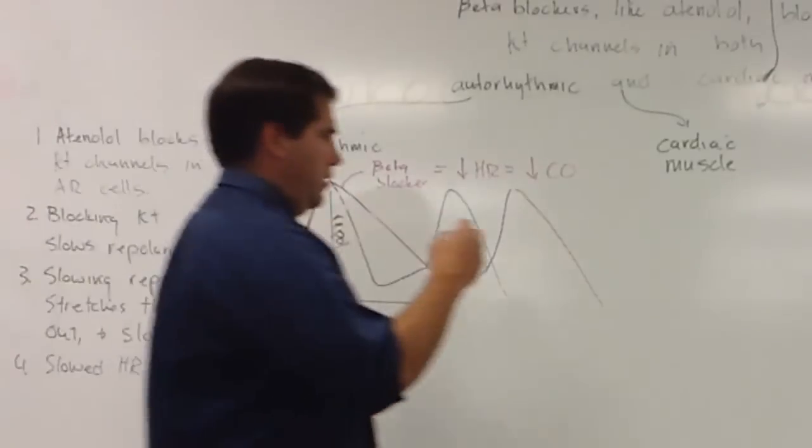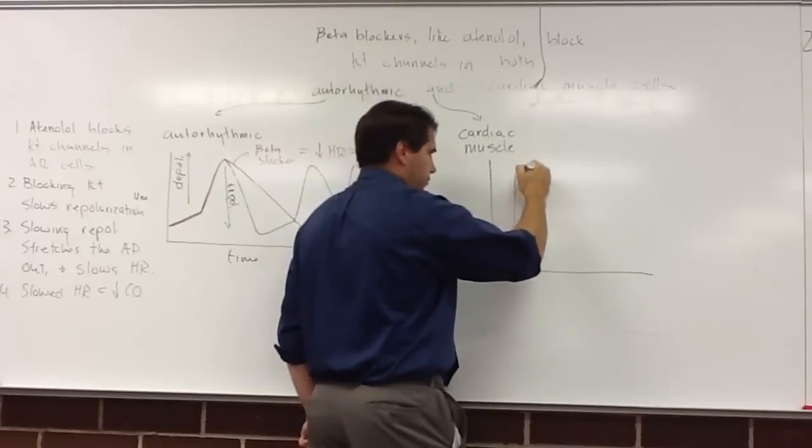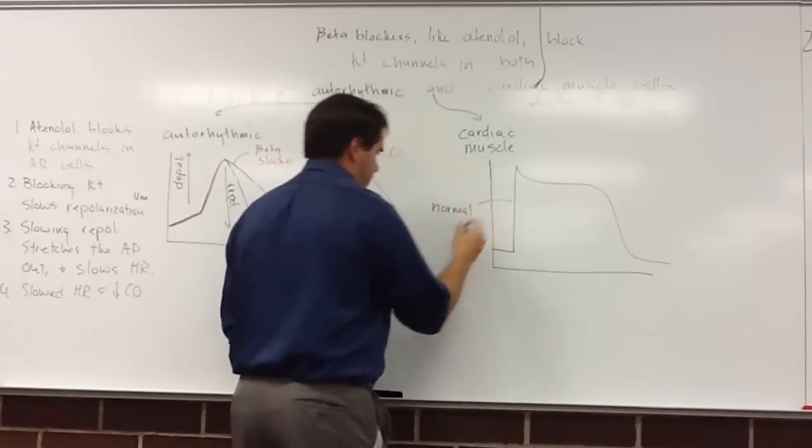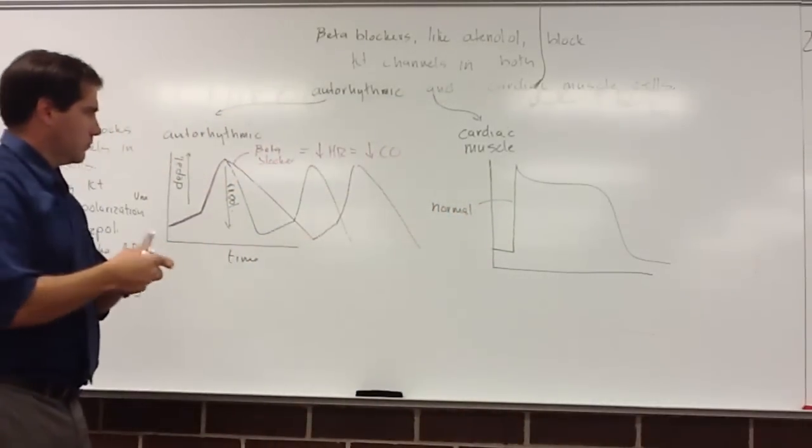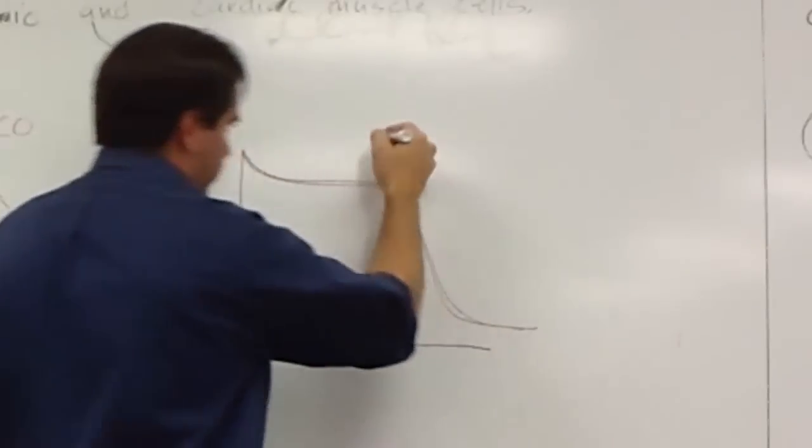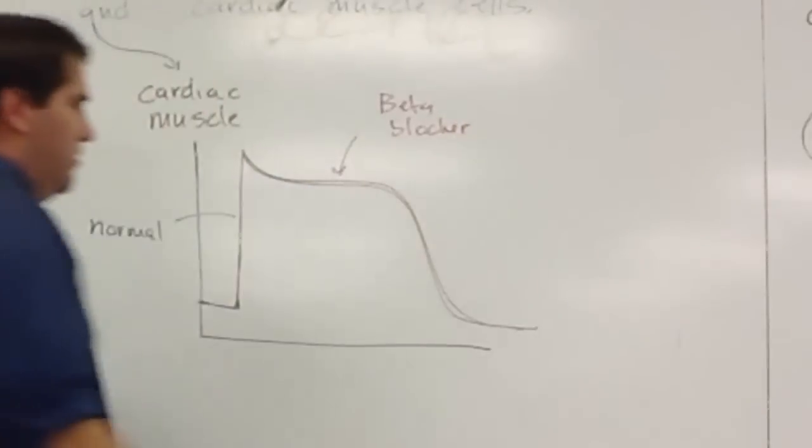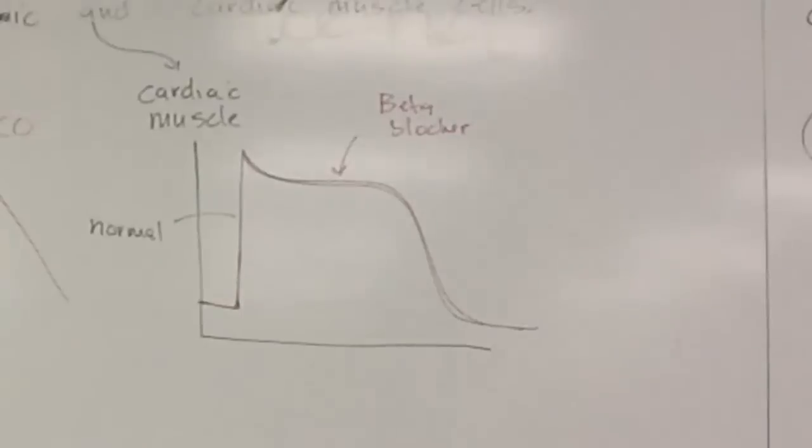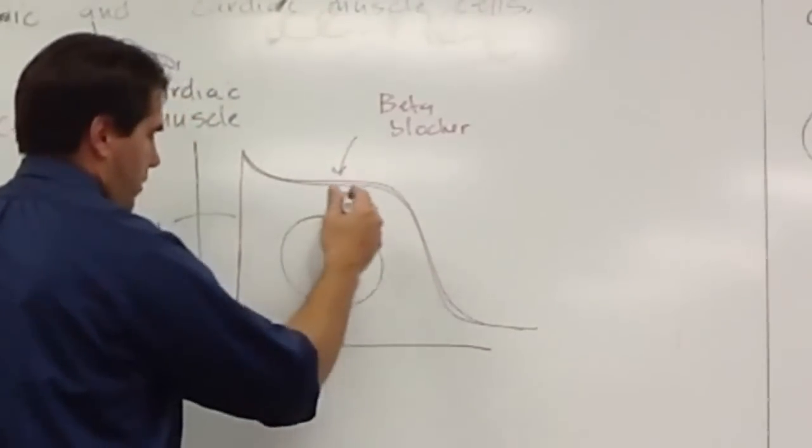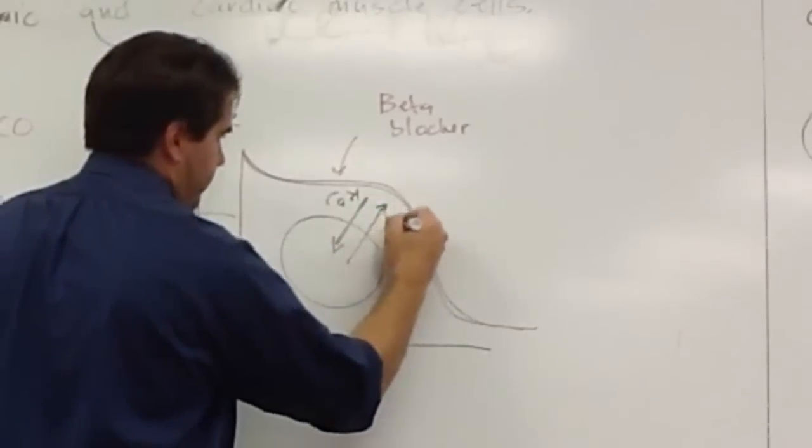Now it's a little more challenging over here, because in all honesty, this would be the action potential in normal, and this would be the action potential in beta blocker. They'll look the same. But underneath, in normal, we will have lots of calcium entering and lots of potassium leaving.